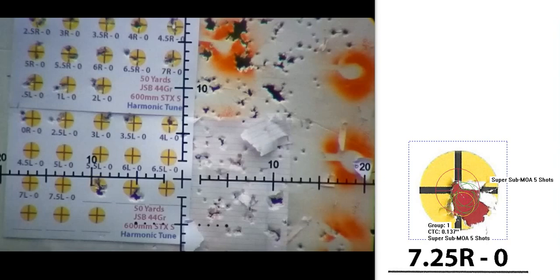And the barrel supported with the Black Arts Design barrel band. All of this is working together to produce super sub-MOA results, and I call super sub-MOA anything less than 0.25 inches center to center at 50 yards and beyond. And you can see my center to center ended up being 0.137 inches, which is almost half of what I consider to be super sub-MOA.